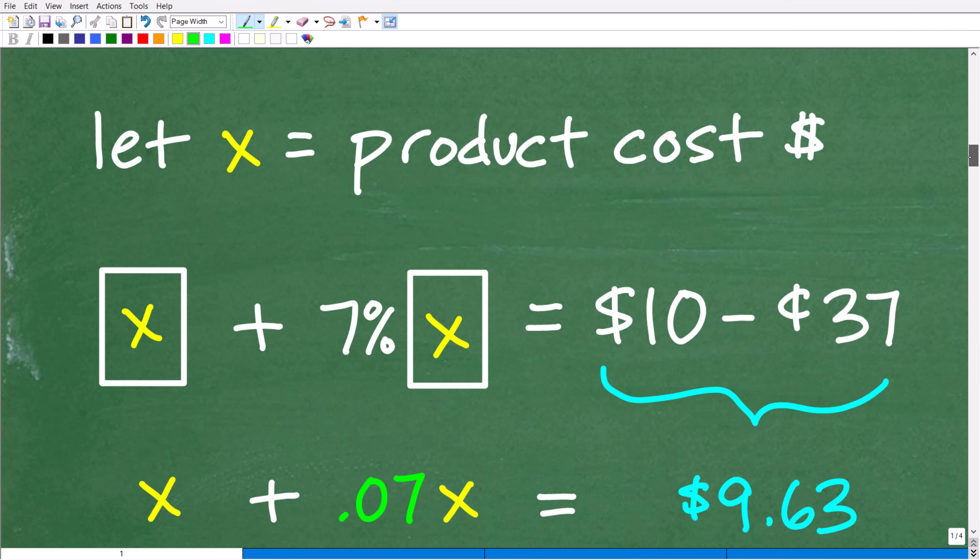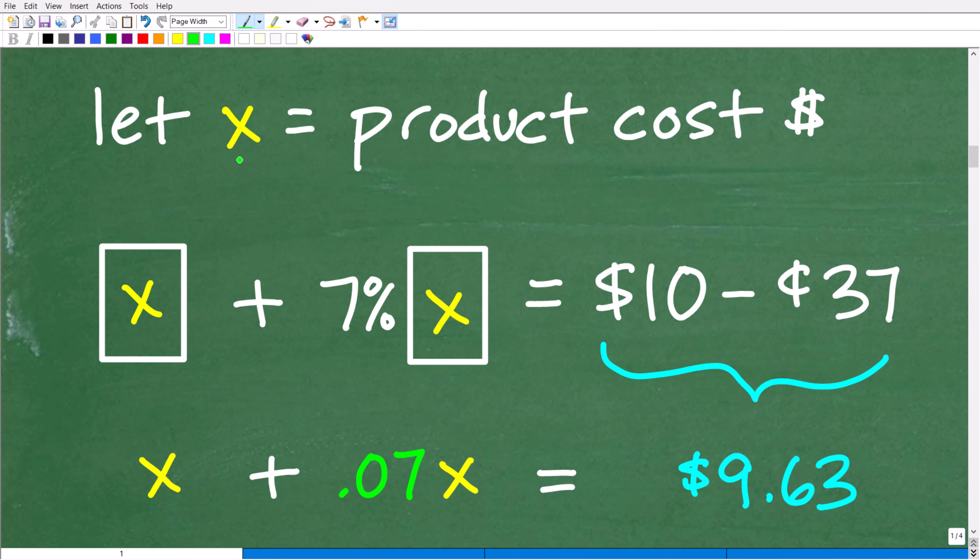So I'm going to use the variable X. So I'm going to let X equal the actual cost of the product. And I'm just going to assume we had one product here. It doesn't make a difference. If we had multiple products that added up to $9, we'll just keep it nice and simple.